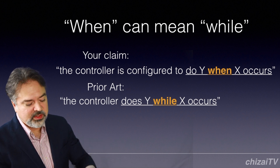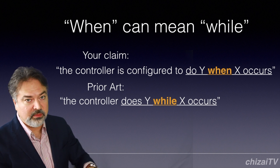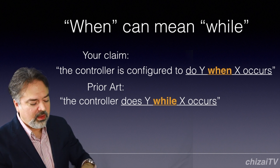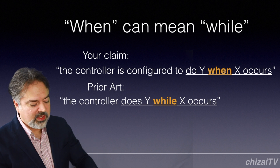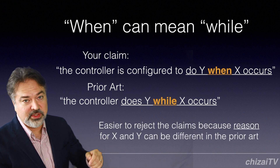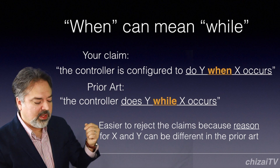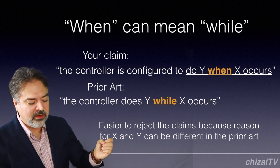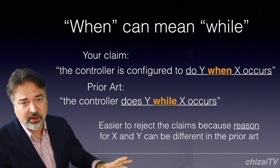So as you can see already, it's a little bit different. The claim language is a little different from the prior art. And in this case, it's easier for the examiner to reject the claim generally because the reason for X and Y can be different in the prior art.